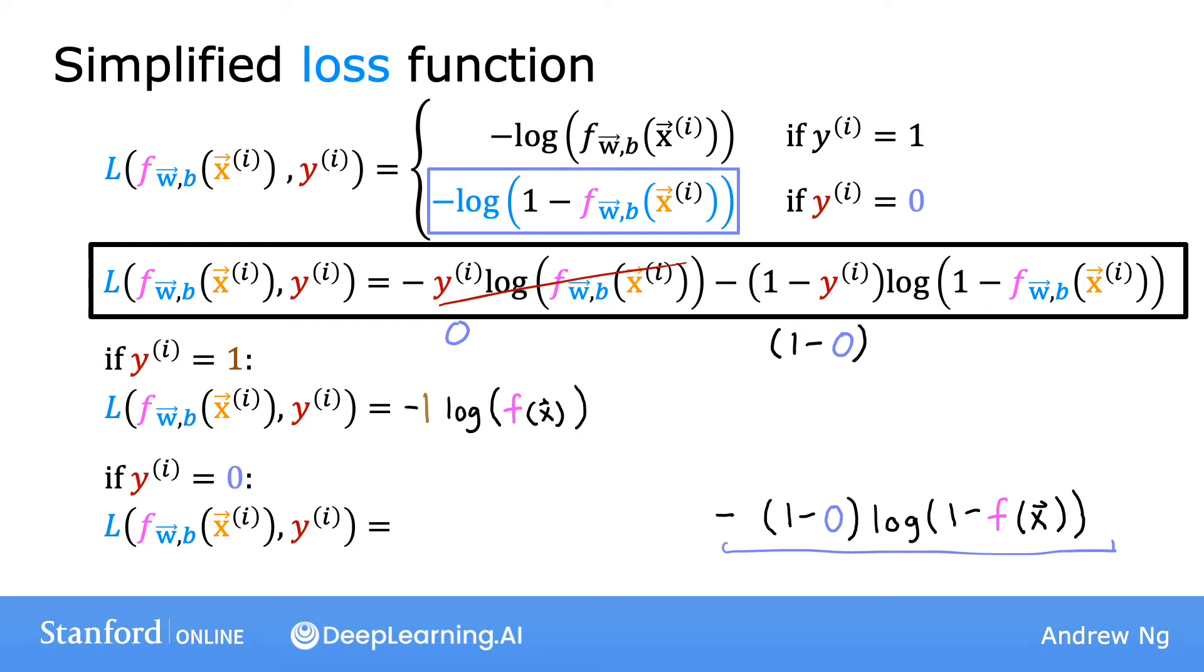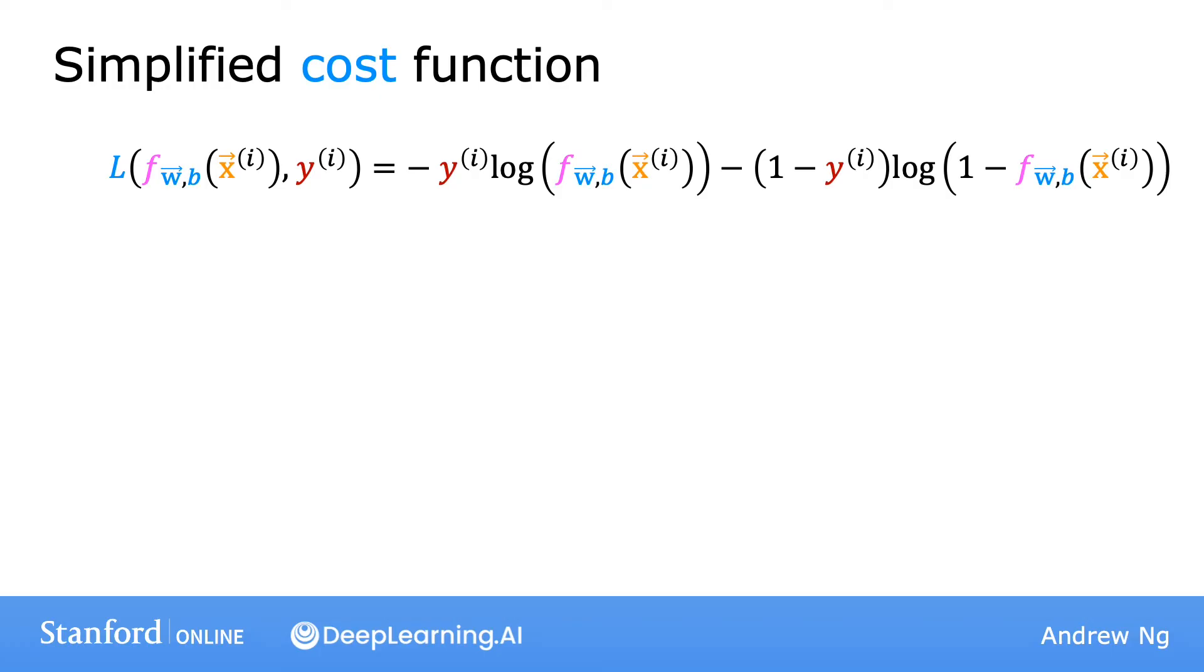Using this simplified loss function, let's go back and write out the cost function for logistic regression. So here again is the simplified loss function. And recall that the cost j is just the average loss, average across the entire training set of m examples. So it's 1 over m times the sum of the loss from i equals 1 to m.